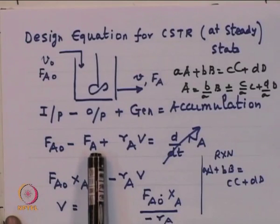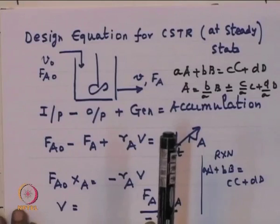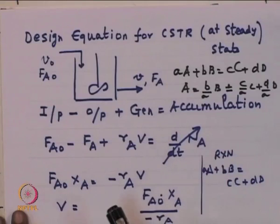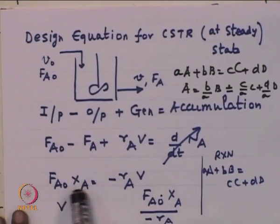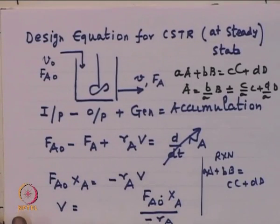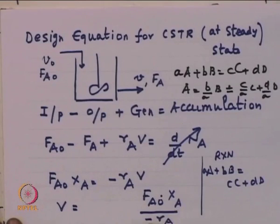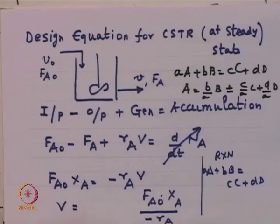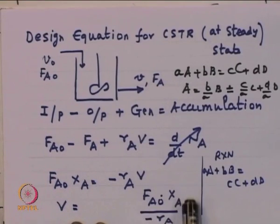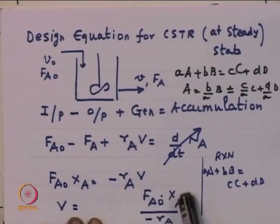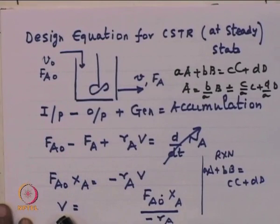This gives us the volume of the CSTR: V = F_A0·X_A/(−R_A). F_A0 is something you know, X_A you can measure, and R_A is the chemical kinetics at which the reaction occurs. The right-hand side is all known quantities. Therefore, given the chemical kinetics, the desired extent of reaction, and the desired production rate, we can determine the required size of the equipment.